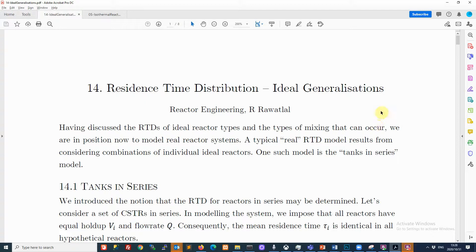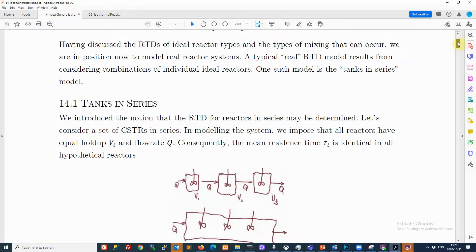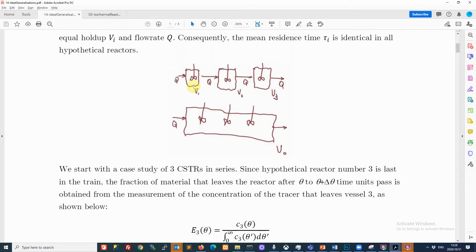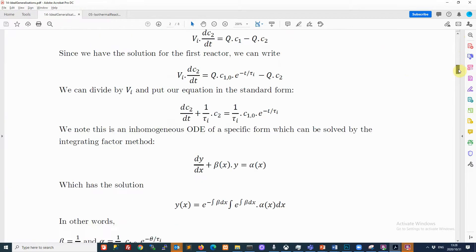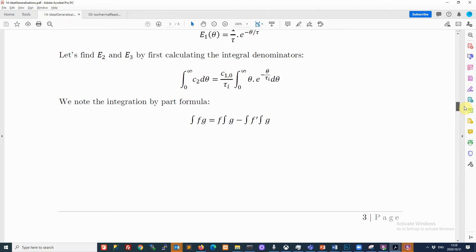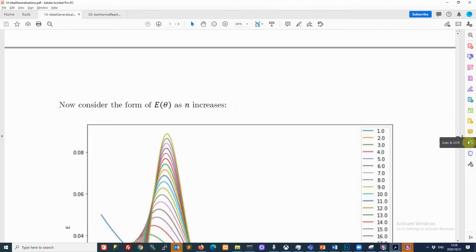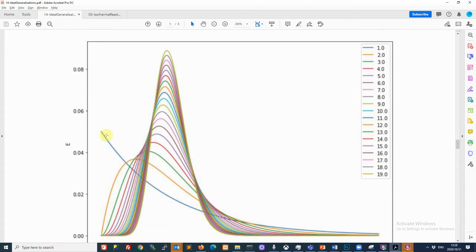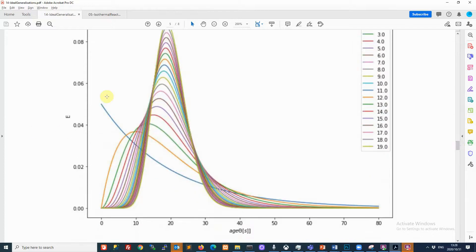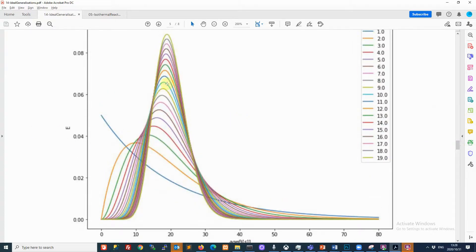This is just a short note about ideal generalizations, especially on the tanks in series section. In the main video we developed the tanks in series model, and there was a certain point that clarifies many issues which I forgot to make. We showed that as you increase the number of tanks your system moves closer to the spike, but I forgot to describe why this is exactly so.